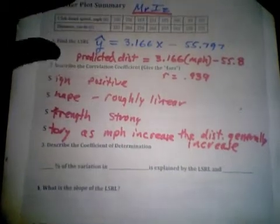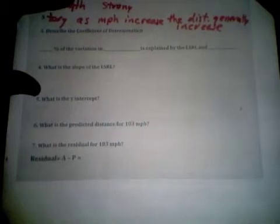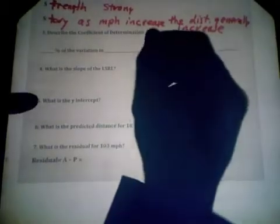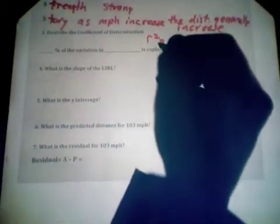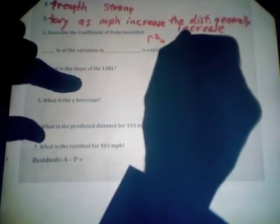Alright, moving on to the next part, the correlation or the coefficient of determination. Coefficient of determination is the r-squared, and that was given to us. R-squared, to go back to the home screen, it said r-squared was 0.88.